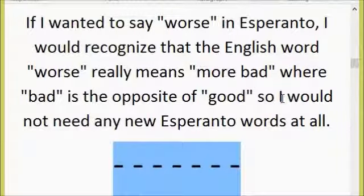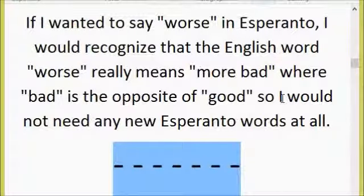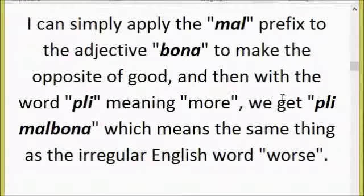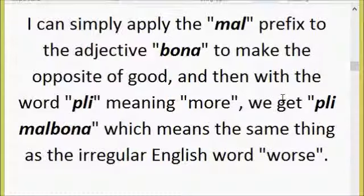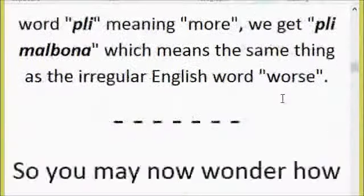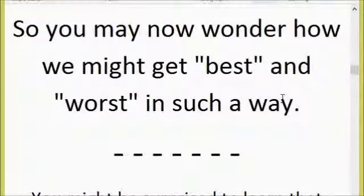If you wanted to say 'worse' in Esperanto, you would recognize that the English word 'worse' really means 'more bad,' where 'bad' is the opposite of 'good.' So you would not need any new Esperanto words at all. Simply apply the 'mal' prefix to 'bona' to make the opposite of 'good,' and then with 'pli' meaning 'more,' you get 'pli malbona,' which means the same as the irregular English word 'worse' — more bad, or more of the opposite of good.